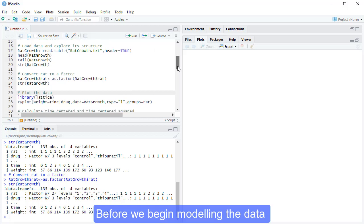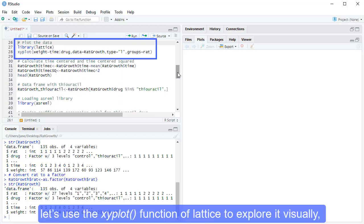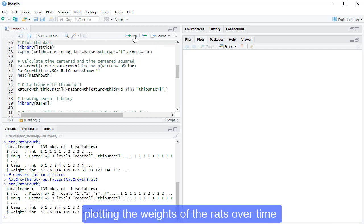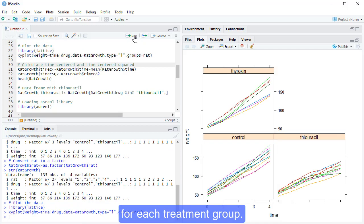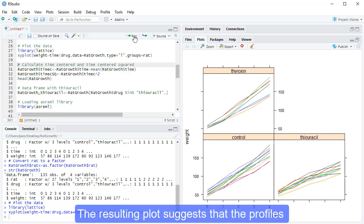Before we begin modelling the data, let's use the xyplot function of Lattice to explore it visually, plotting the weights of the rats over time for each treatment group. The resulting plot suggests that the profiles have a hint of curvature, so we'll model them using both linear and quadratic time effects.